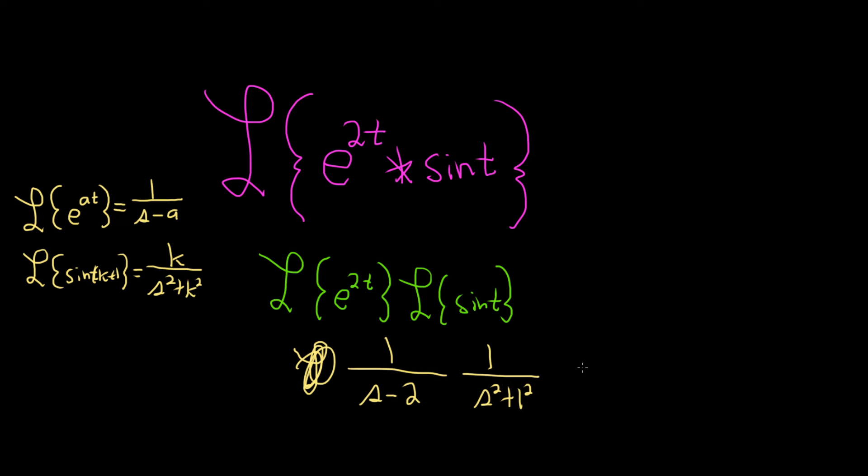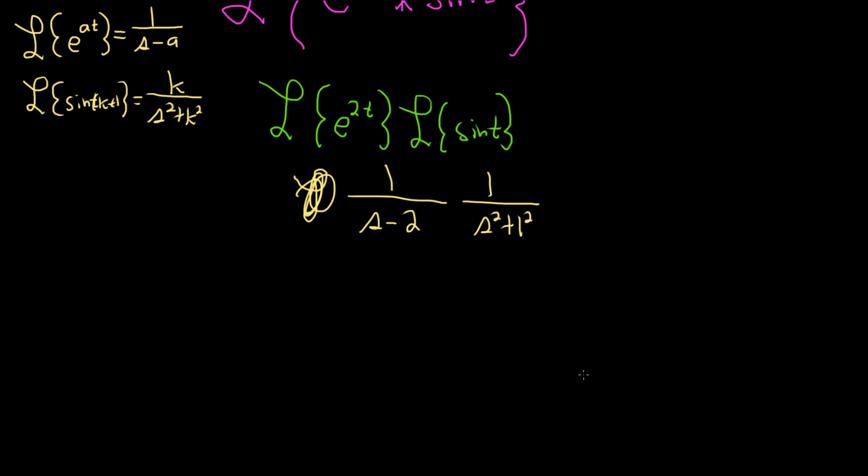We could combine it as one fraction. So 1 times 1 is 1, and on the bottom we'll have s minus 2 times s squared plus 1. That's the Laplace transform of the convolution.